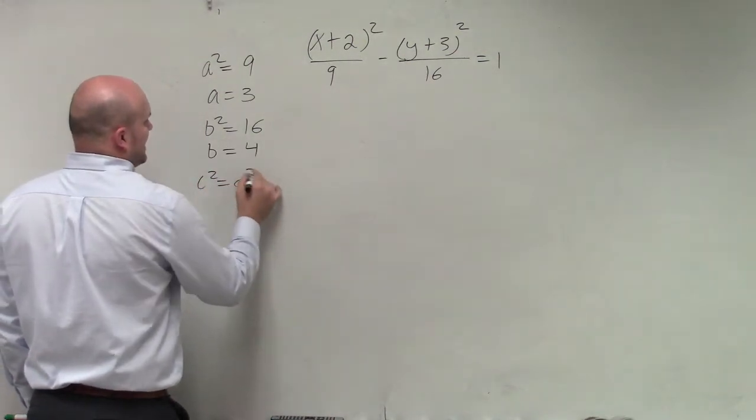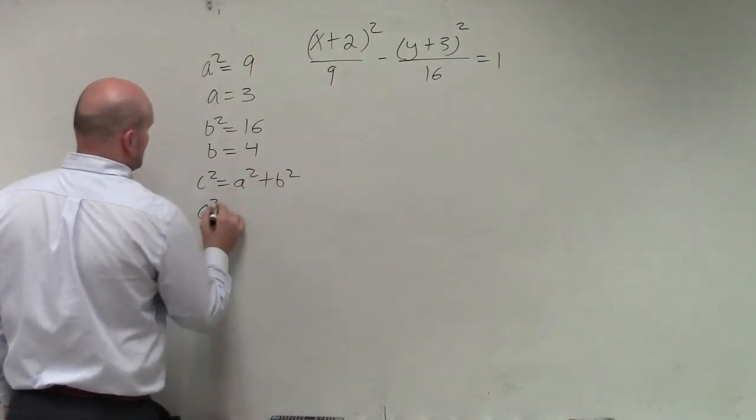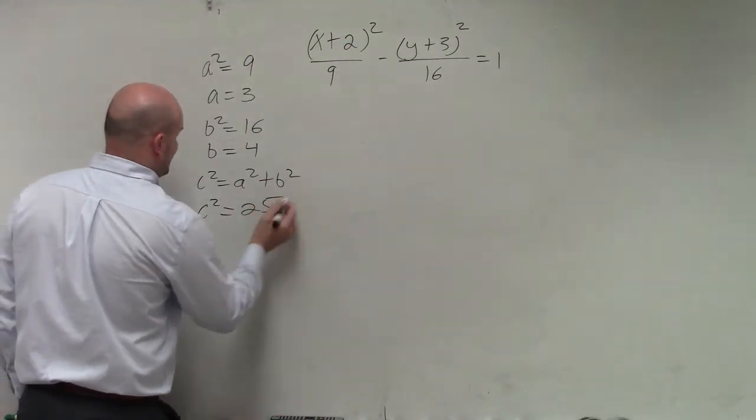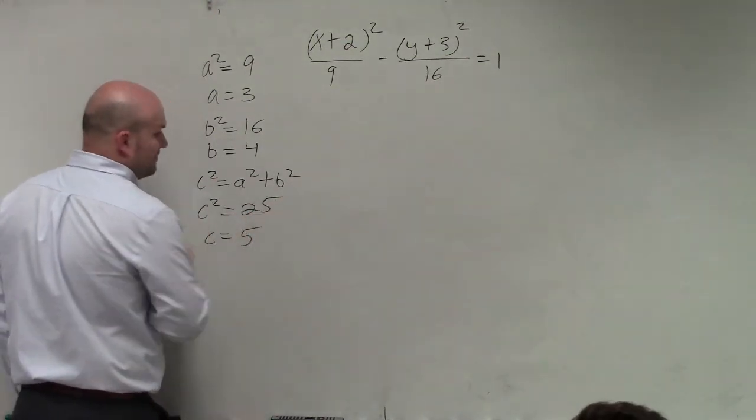And then my c² is a² plus b², which is 25, so c equals 5.